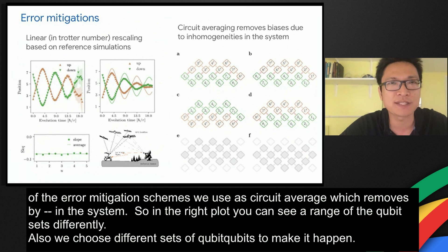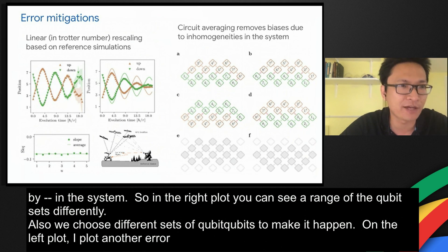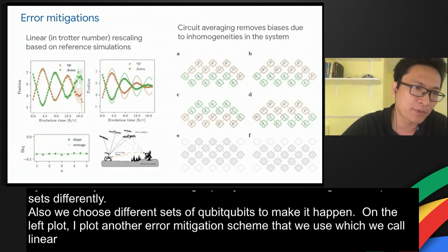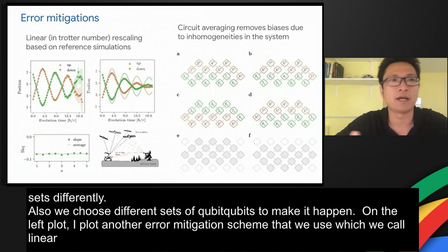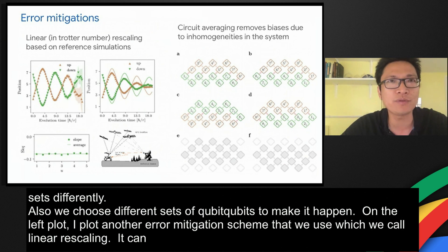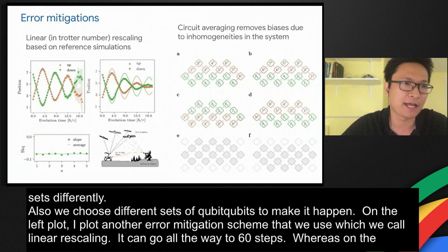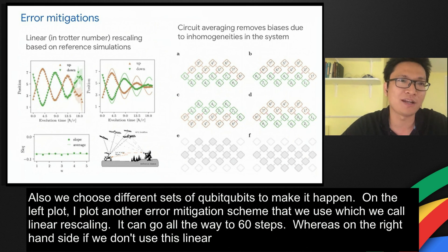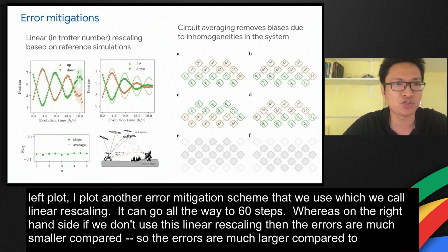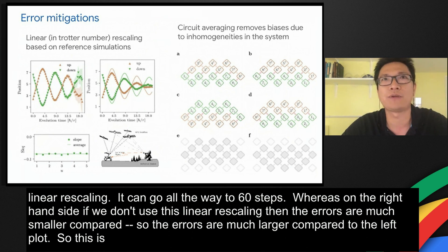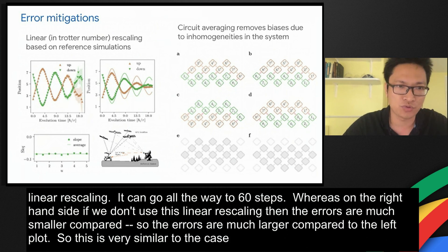On the left plot, I plot another error mitigation scheme that we use, which we call linear rescaling. Linear rescaling is very important, as you can see in this comparison. On the left plot, we use linear rescaling for the center of mass motion. It can go all the way to 60 Trotter steps. Whereas, on the right-hand side, if we don't use this linear rescaling, then the errors are much larger compared to the left plot. This is very similar to the case of the GPS. We already use the reference state to keep track of the errors.